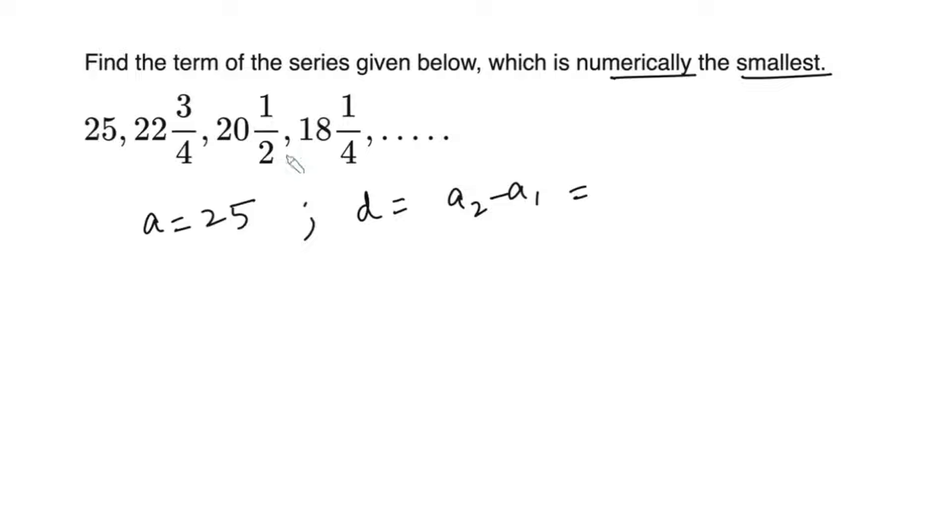So we have 22 3/4 minus 25. 22 3/4 is same as 91/4 minus 25, which can also be written as 100/4, right? So we have the common difference as negative 9/4.